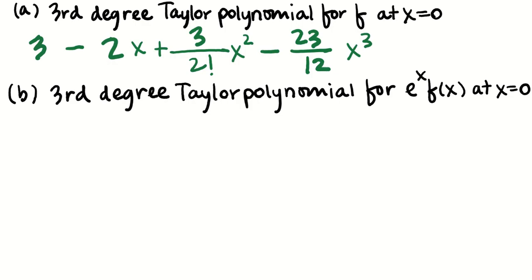Now I want the third degree Taylor polynomial for e to the x times f of x at x equals 0. You could try taking repeated derivatives using the product rule, but that's not going to be efficient. Instead, since I have the third degree Taylor polynomial for f, I can write down the third degree Taylor polynomial for e to the x at x equals 0, and then just multiply them together — it'll be a big distribution, like really big foiling.